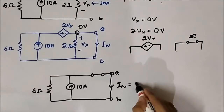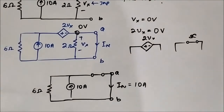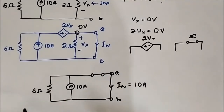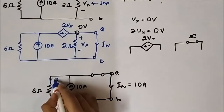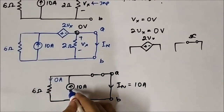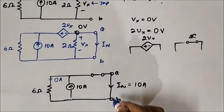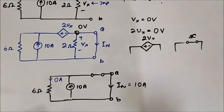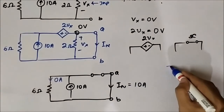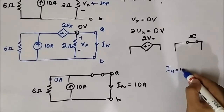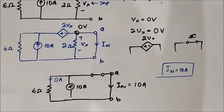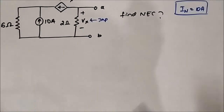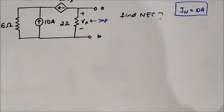So, In is equal to 10 ampere. We have determined the Norton current: In = 10 ampere. Now we have to determine the Norton equivalent resistance, Rn.